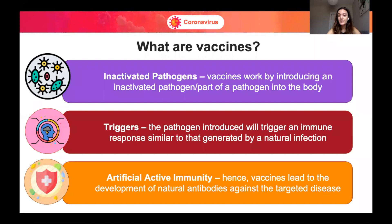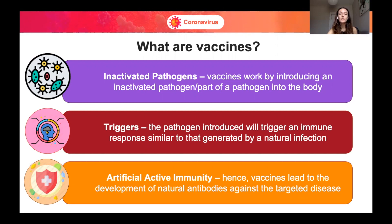Hence, vaccines will lead to the development of natural antibodies against the targeted disease and hence you're going to get artificial active immunity. So it's going to be immunity, but it's not going to be immunity that you've developed through natural infection — it's going to be artificial.